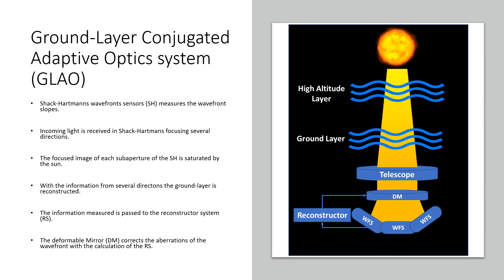There are several adaptive optics configurations. In this experiment, the solar GLAO configuration was chosen, which is represented schematically on the right of the slide. GLAO stands for Ground Layer Adaptive Optics. This is a complex configuration for solar observations, which aims to reconstruct the ground layer of the turbulence — the layer closest to the telescope pupil.